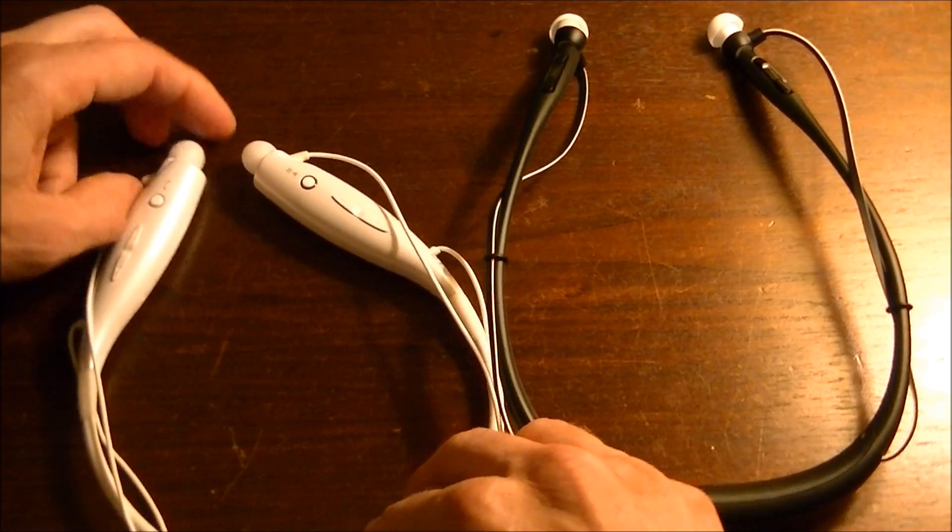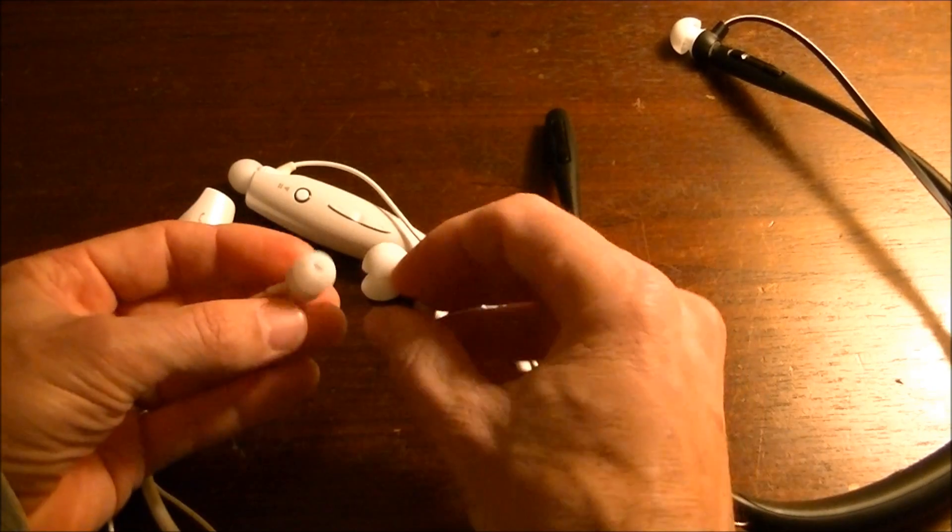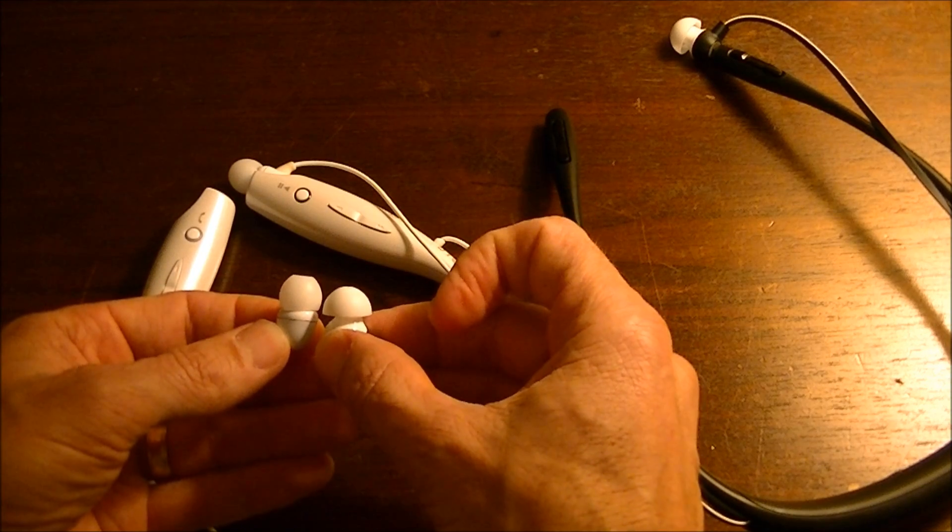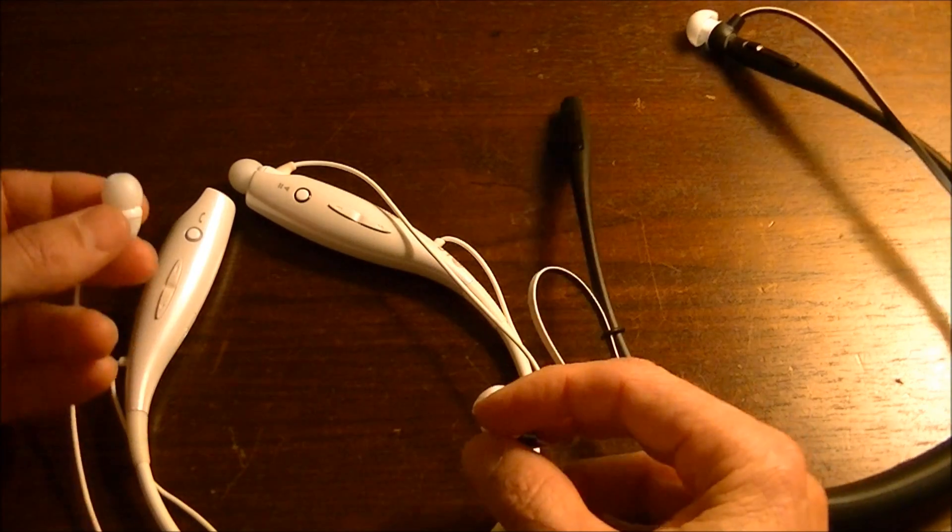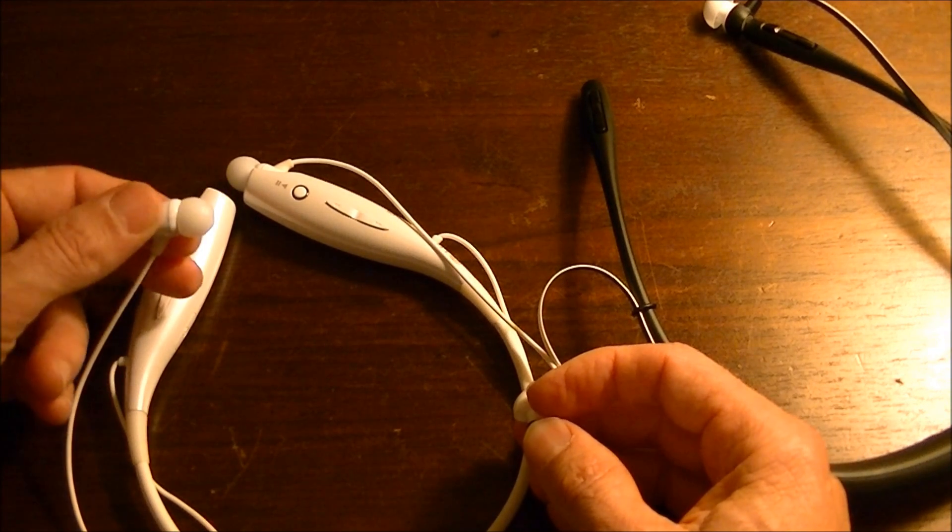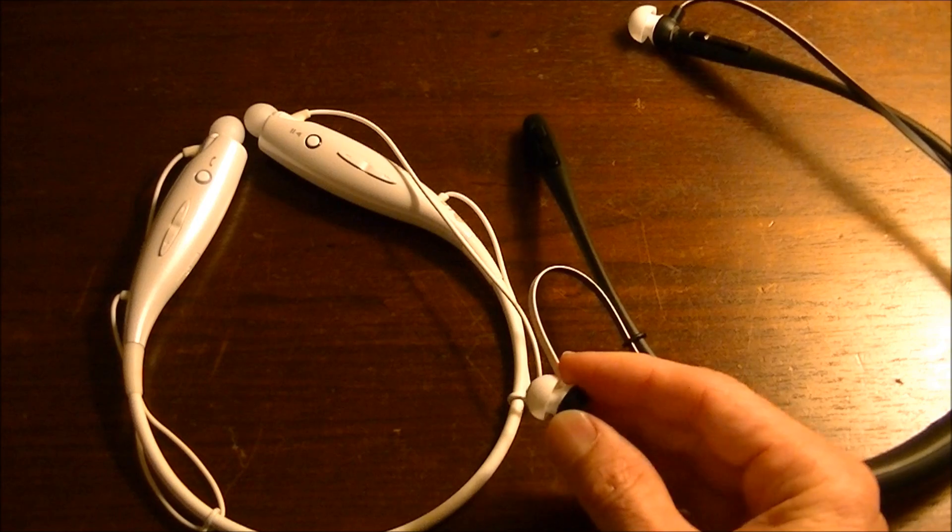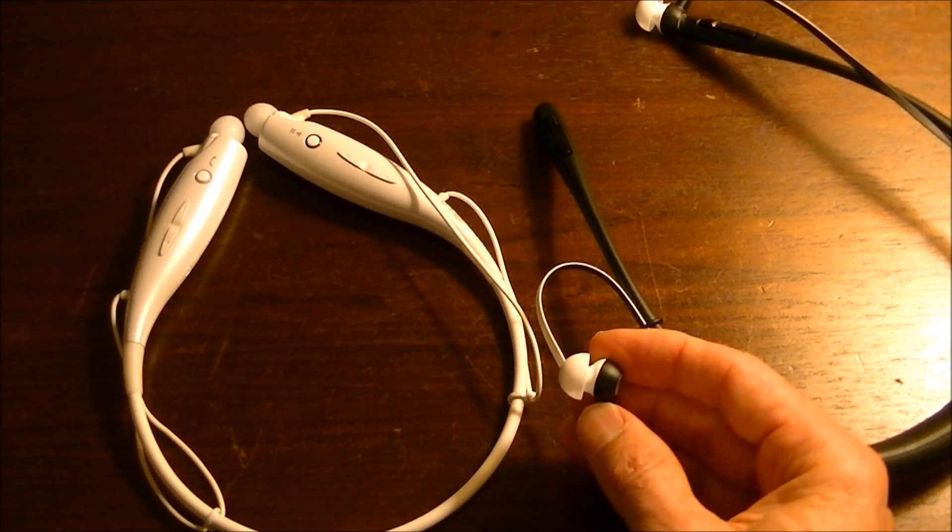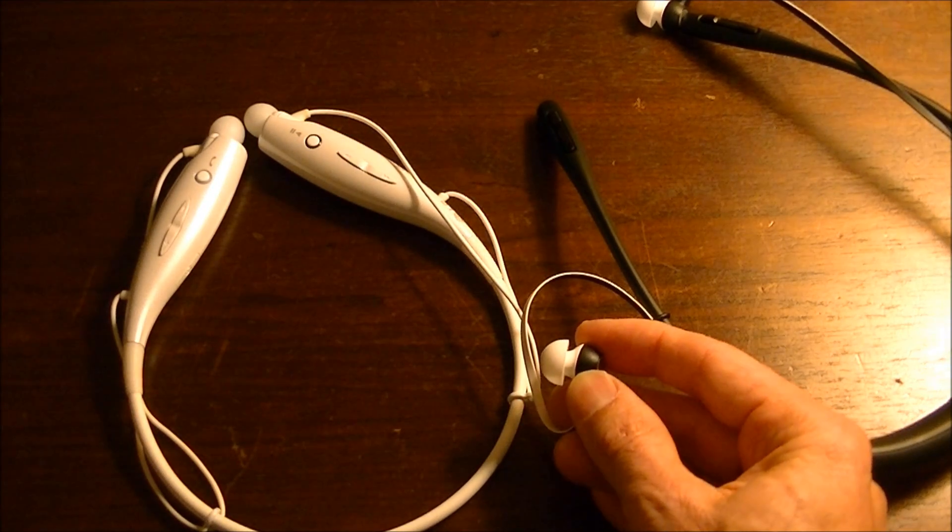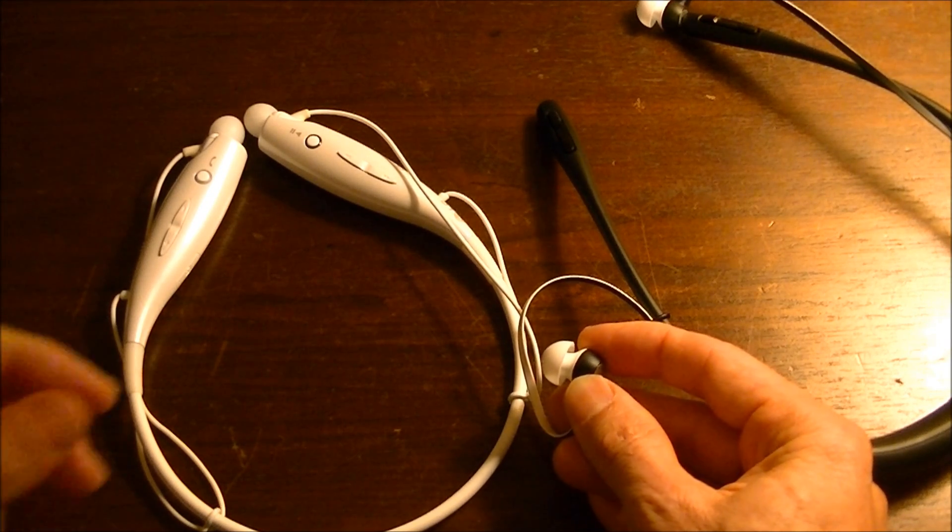As far as the earbuds, the LG's kind of go, the shape is so that they'll go more into your ear. And the Motorola's, they still go in your ear, but they don't go in quite as far. The seal is more on the outside. The LG's are probably a little bit easier just to put in your ears and not have to jiggle them around. The Motorola's, you kind of have to jiggle them around to get a good fit. But once you do, and I mentioned this in my full review of the Motorola's, once you do, they stay put really well. As with any earbud, the fit is really, really important to get a good sound quality.